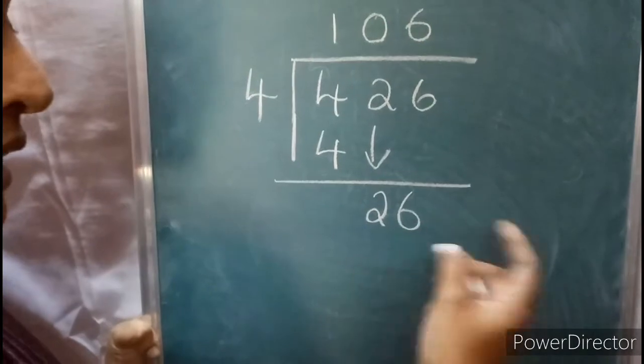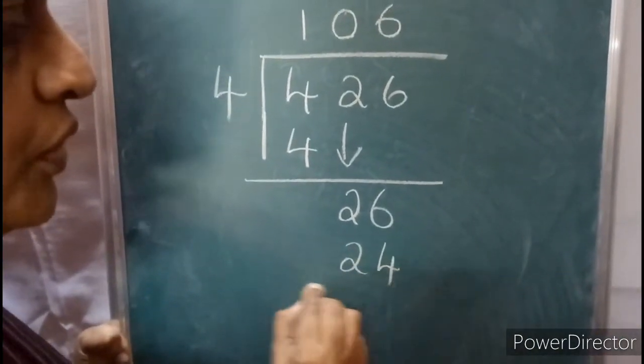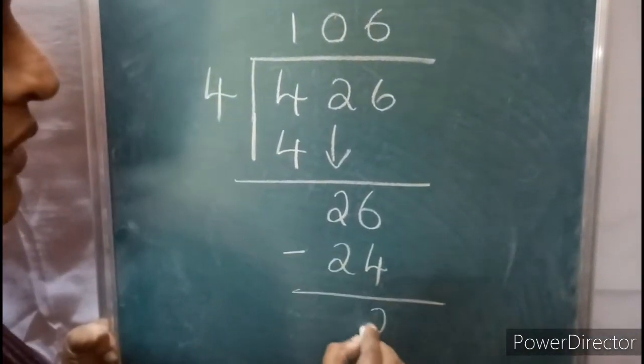4 sevens are 28, that is greater than 26. So 4 sixes are 24. Now subtract, you get 2.